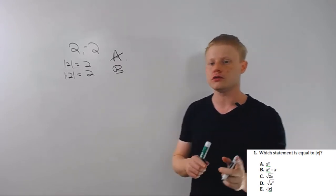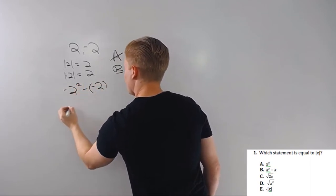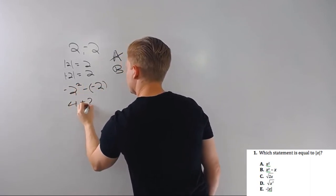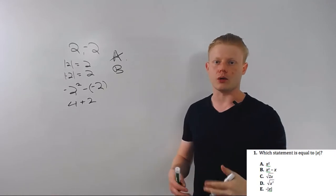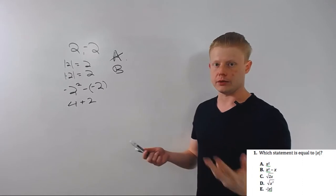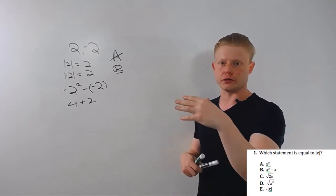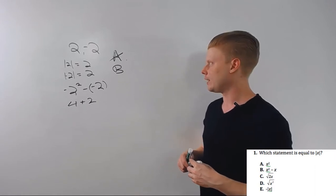B: well two squared is four minus two, that works for that, but it doesn't work for negative two because negative two squared minus negative two, well that's four plus two, that's six. And by the way that would only work on two, that wouldn't work for any other number.